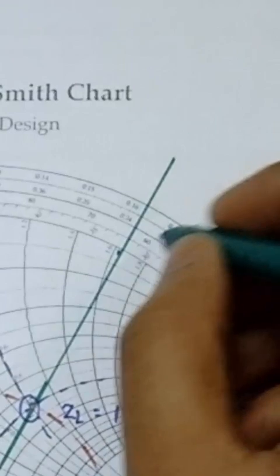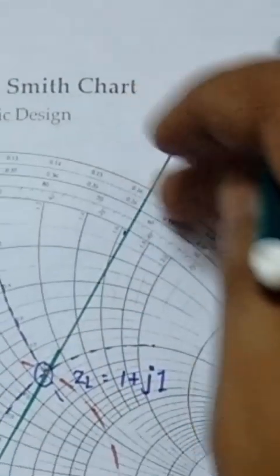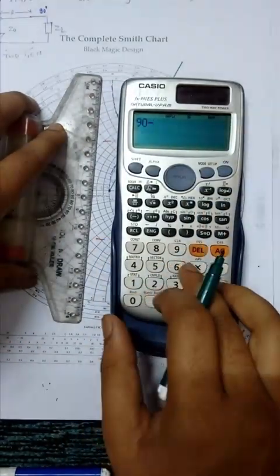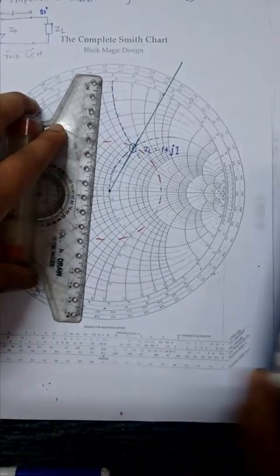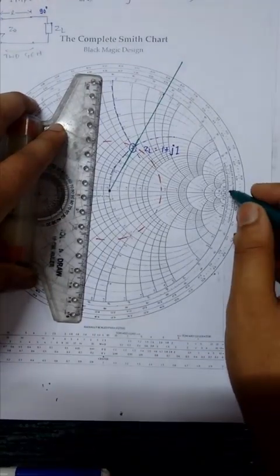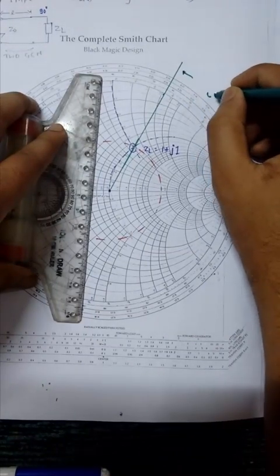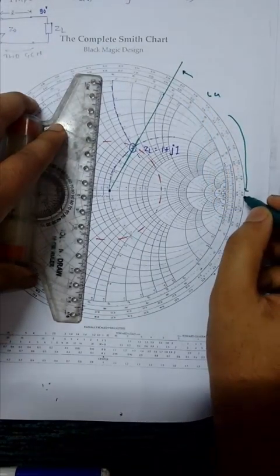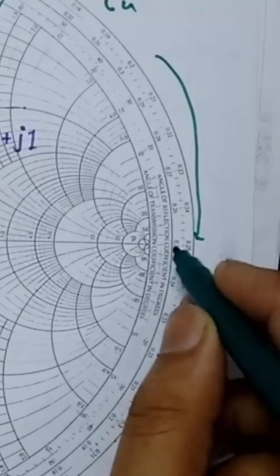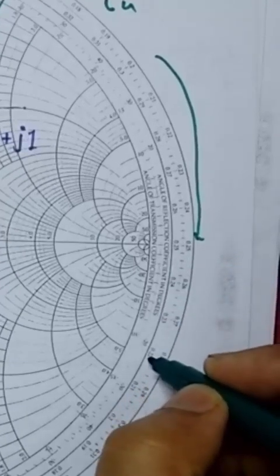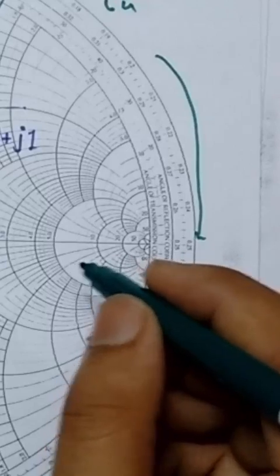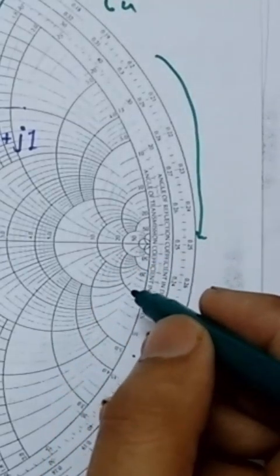You can see here 64 degrees. 90 minus 64 equals 26. Now you have to move by 26 degrees. Total here is 64, and we have to move further by 26 only: 10, 20, 26. And you have to find this angle.